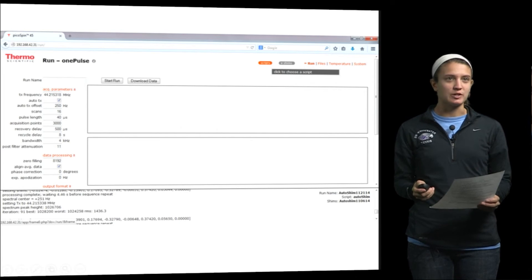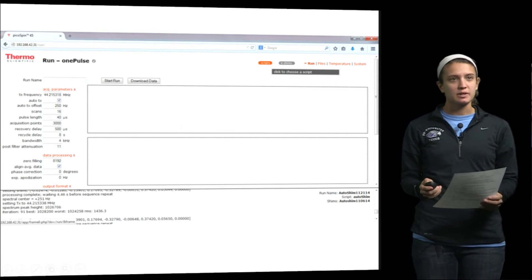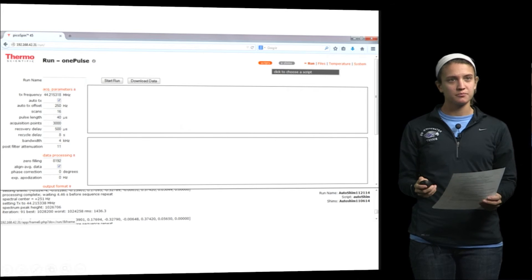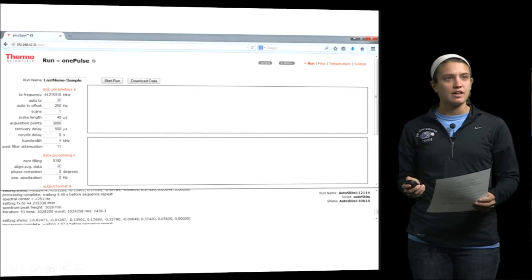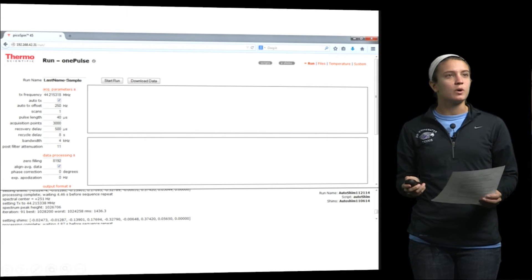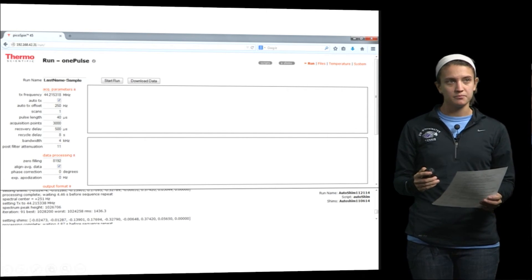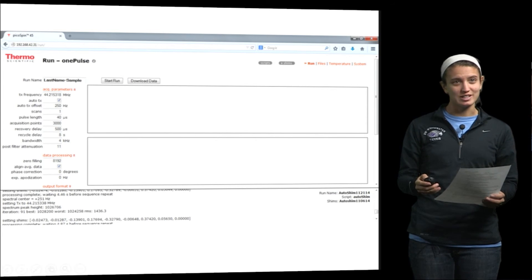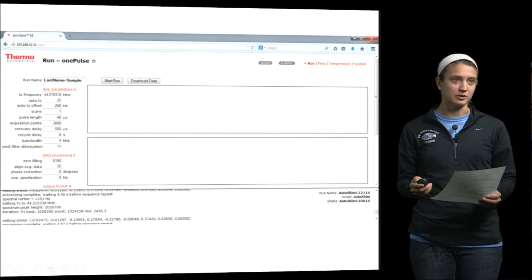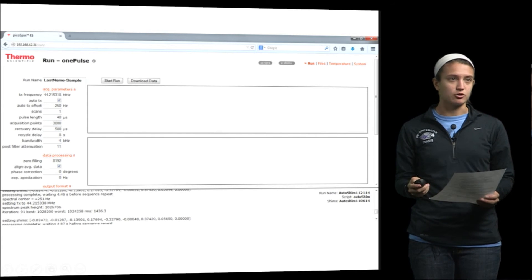Now that we have injected the sample, we are going to run the sample. So start by clicking on run in the upper right hand corner. And then click on scripts and then click on one pulse. That will bring up this screen. You want to title this using your last name and then the sample name. And then you also want to make sure that all the settings that you have on your screen match the ones that we have provided for you here. And you can also see these in your instructional manual.